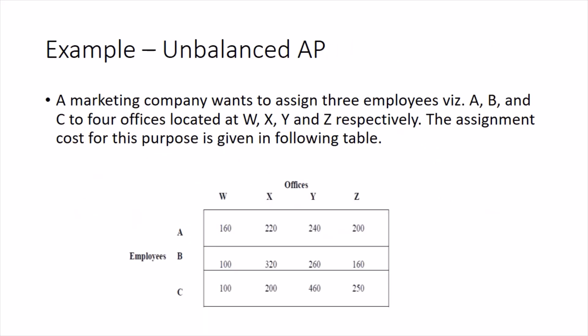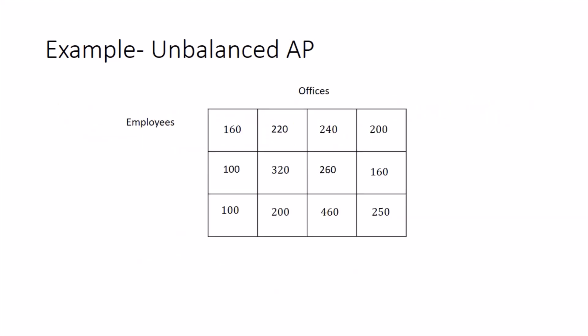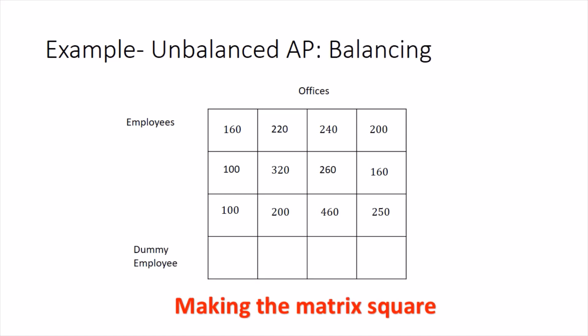Once balanced, we apply the Hungarian method. Let's look at an example: a marketing company wants to assign three employees A, B, C to four offices W, X, Y, Z, with the table entries representing assignment costs. Writing this in matrix form, we have three rows for employees and four columns for offices. Since it is not a square matrix, this is an unbalanced assignment problem.